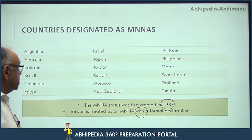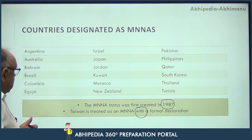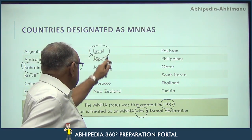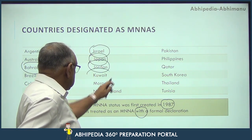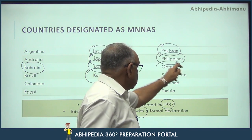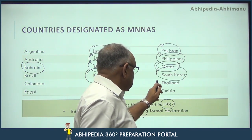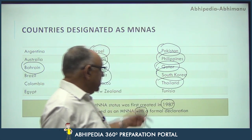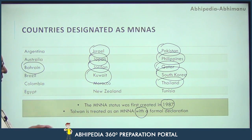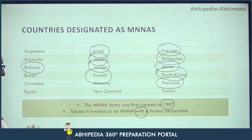The Asian countries which have been given MNNA status are: Bahrain, Israel, Japan, Jordan, Kuwait, Pakistan, Philippines, Qatar, South Korea, and Thailand. These are the various Asian countries enjoying the Non-NATO Ally status. Out of 18 MNNA countries, 10 countries exist in Asia — this shows how important Asia is for the US. It also highlights how important the Pacific Ocean and the Indo-Pacific region are.